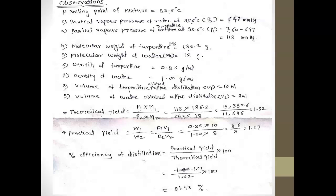Finally, the percent efficiency of steam distillation is calculated using the equation: (Practical Yield / Theoretical Yield) × 100. With a practical yield of 1.07 and a theoretical yield of 1.32, substituting these values into the equation gives a percent efficiency of 81.43%.